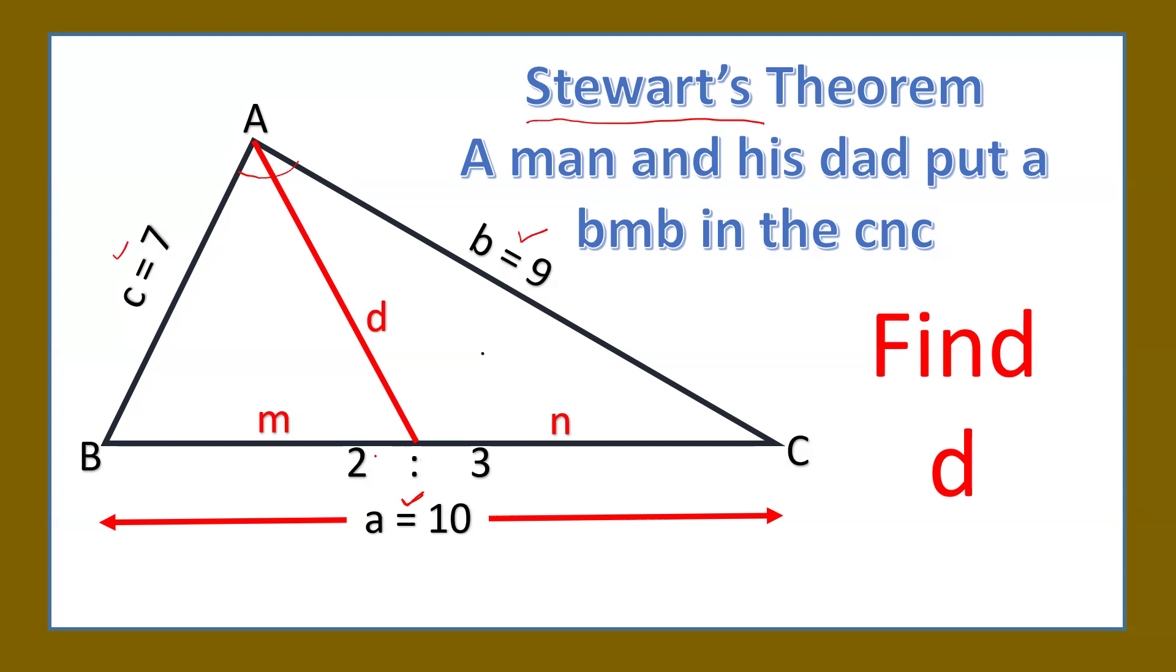And the ratio of these two points, if I take this point as D, then BD and DC are in the ratio of m is to n, which is 2 is to 3. We have to calculate the value of d, this line which is known as cevian. We have to calculate the length of this.